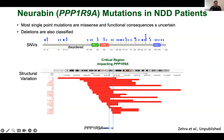You can see SNVs — single nucleotide variants — impacting different protein domains, including disordered domains. The functional consequences of these mutations remain uncertain clinically. Structural variations shown as red bars have been found in different neurodevelopmental disorder patients impacting PPP1R9A. Some deletions are found to be de novo — not in the parents' DNA — showing strong association, but not necessarily causation because PPP1R9A or neurobin has not been modeled to show behavioral or pathogenic causation for NDDs.